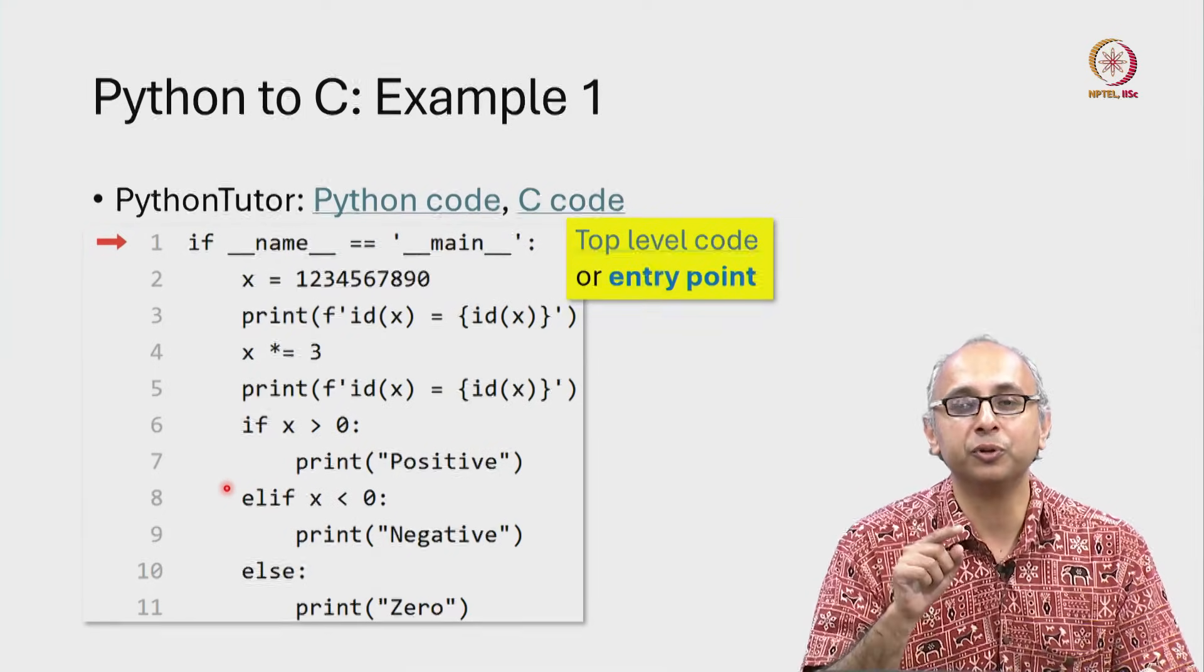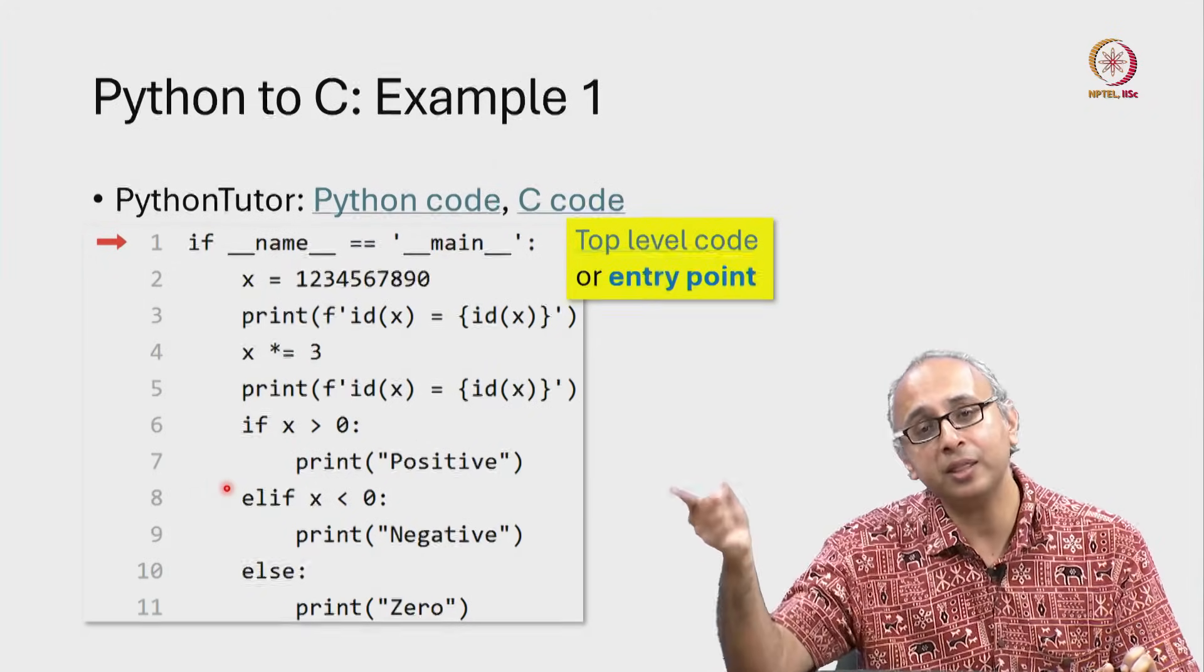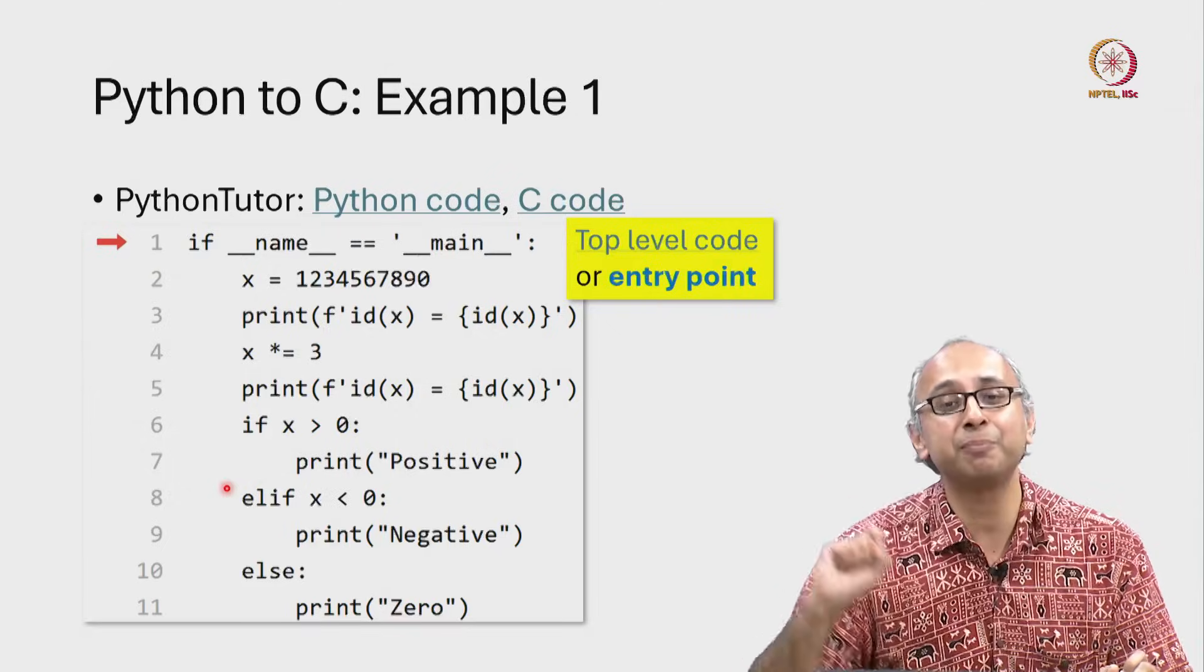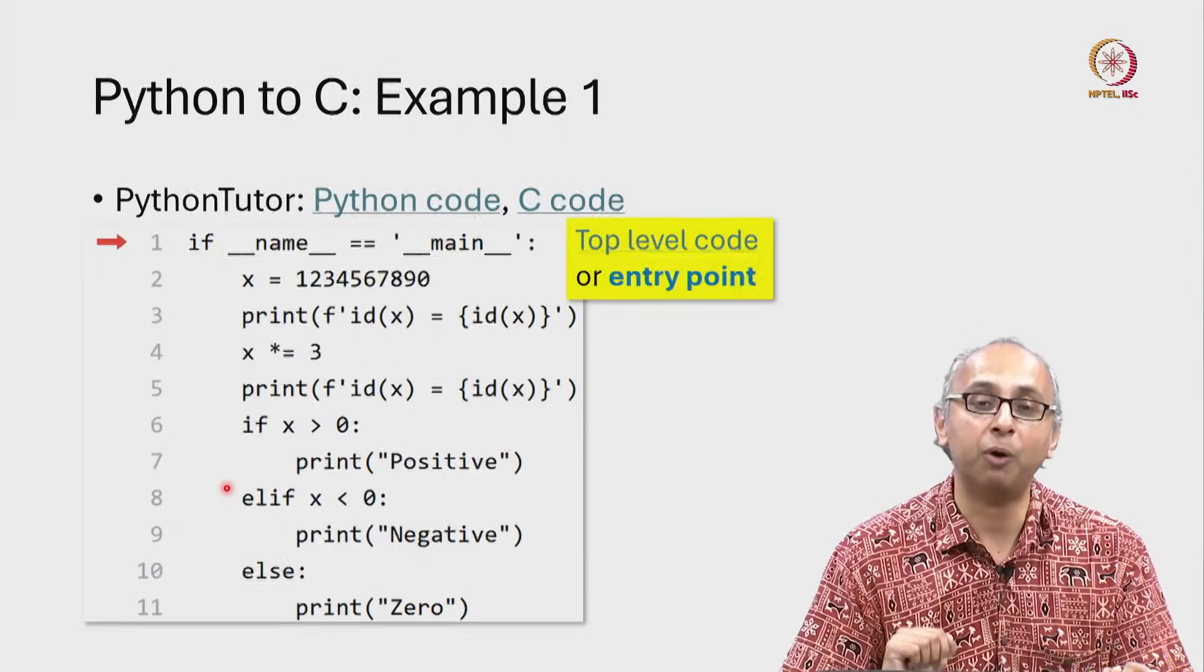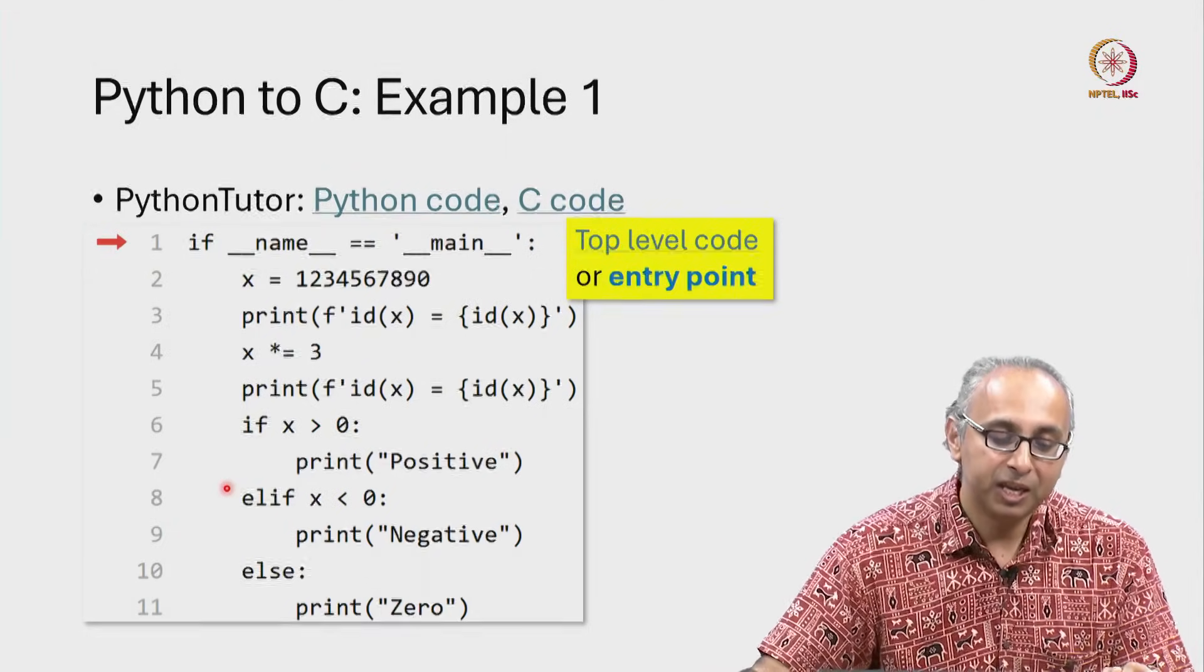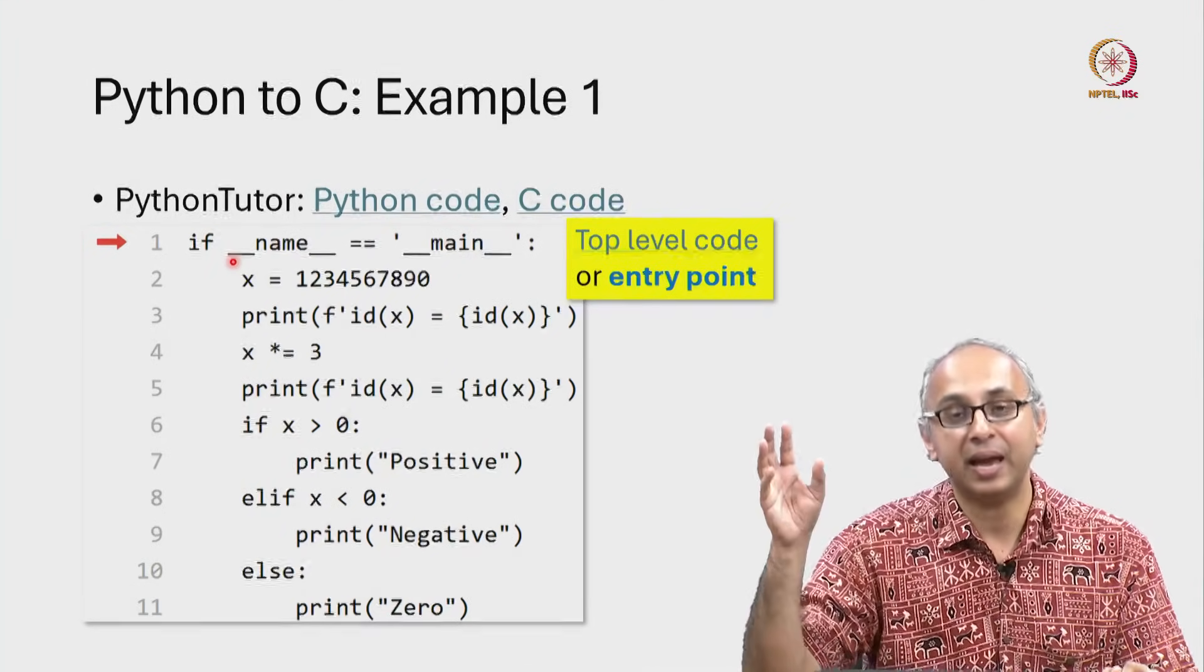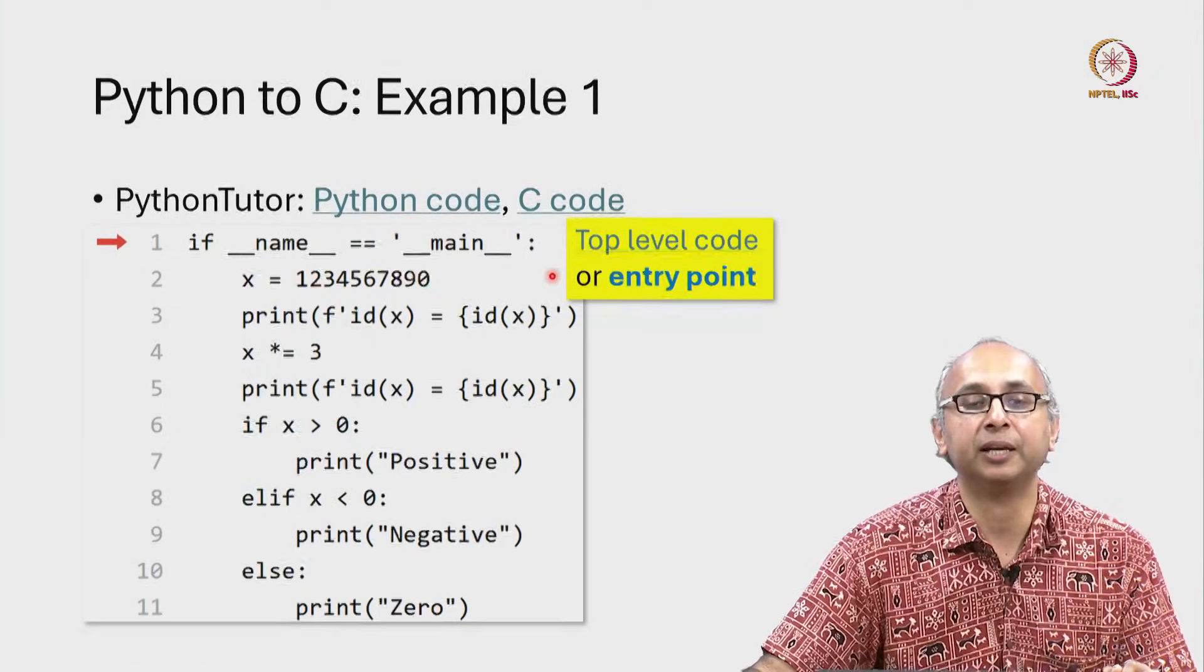The advantage of writing code this way is now someone could take this program of ours and import it into another program where they want to use that program as the main. And so the functions that we have written in our code could be used as helper functions in their code. We have seen how to import other pieces of code into our programs. Now, perhaps somebody wants to import our code into their programs. If we just de-indent this and we do not keep this if condition, then they will not be able to successfully import our code into theirs and use their code as the starting point. So for those reasons, we write this particular if condition.